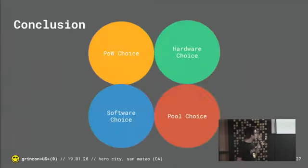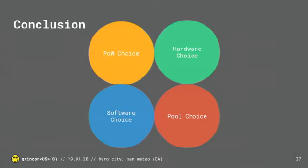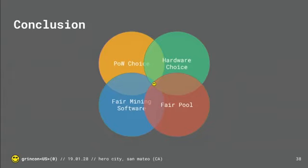We are reaching the conclusion. As I was saying, there are four parts: proof-of-work choice, hardware choice, software choice, and pool choice. What is really hard for me to tell you right now is which proof-of-work and hardware choice are best in the future. But I can tell you to choose fair mining software that gives back to the Grin Development Fund, and to choose a fair pool, in order to maximize your investment in Grin.